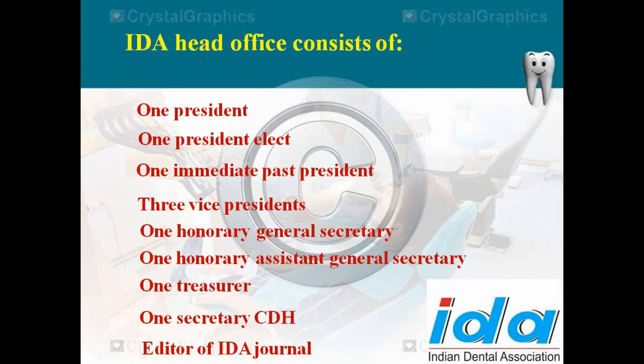IDA has a governing committee consisting of one president and one president-elect and one immediate past president. The president is the current working president; the president-elect is the next one supposed to join after the current president's term. There are three vice presidents, one honorary general secretary, one assistant general secretary, one treasurer, one secretary of CDH, and one editor for the IDA journal.